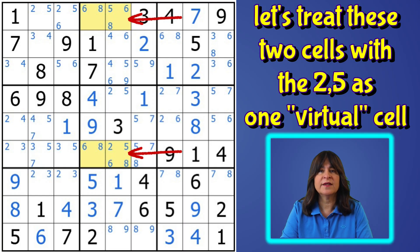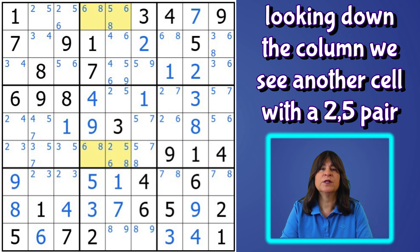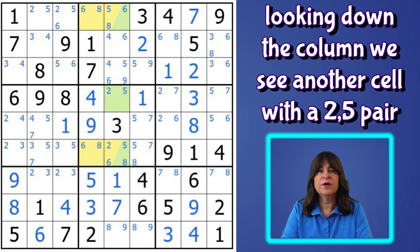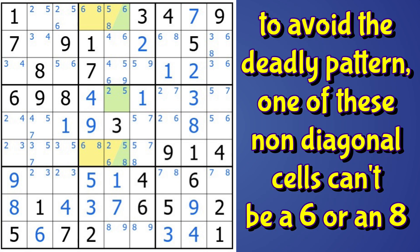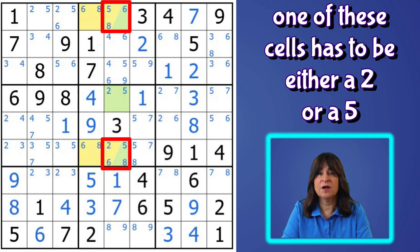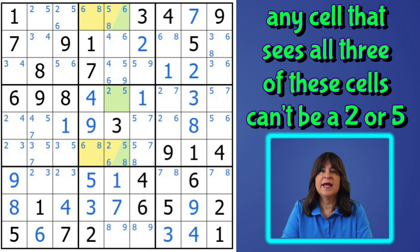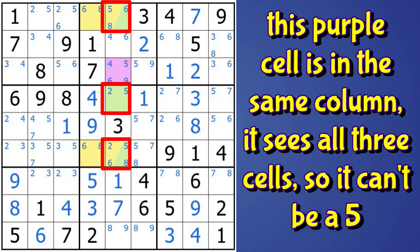We can treat these two non-diagonal cells as one cell with a two-five pair, and if we look down the same column, we see there's a cell with a two-five pair. So this forms a locked pair, meaning the two and five are locked into these three cells in column five. The two and the five are in two of these cells — one is for sure in this two-five cell. So to avoid having multiple solutions to the puzzle, one of these non-diagonal cells is the other number, either the two or the five. Now any cell that sees all three cells can't be a two or a five, and this cell in the same column sees all three cells and it has a five, so we can eliminate this one.